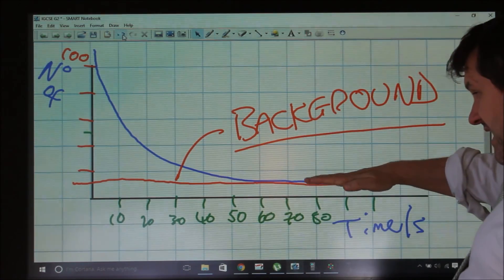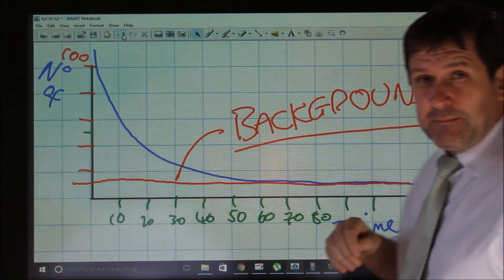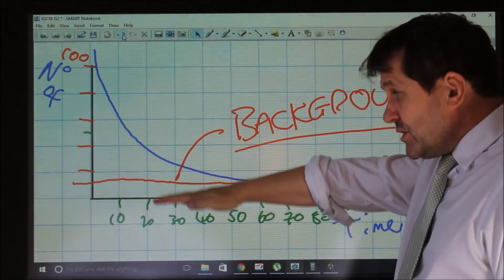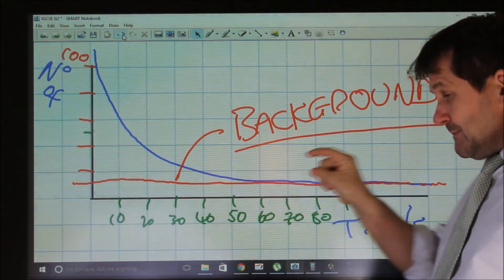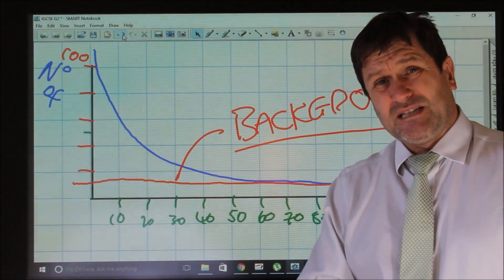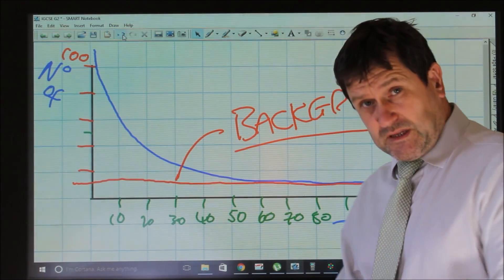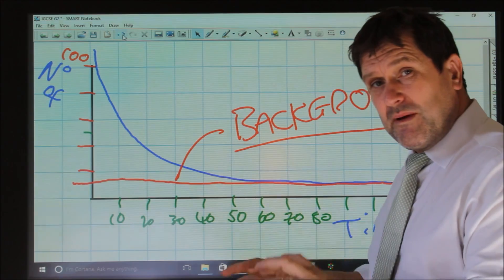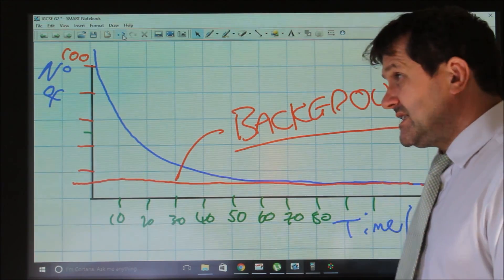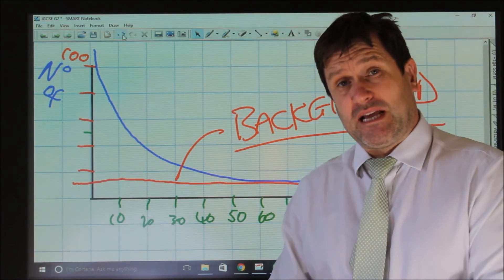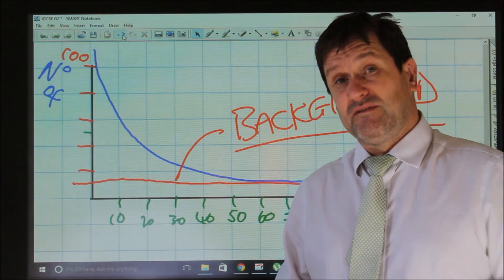Background radiation means that it will always stay at a certain value. When we look at the graphs, if the graph levels out with a gap before zero, that's because of background radiation. It's important we remember background radiation and that half-life is the time taken for the number of radioactive nuclei to fall to half their original value.